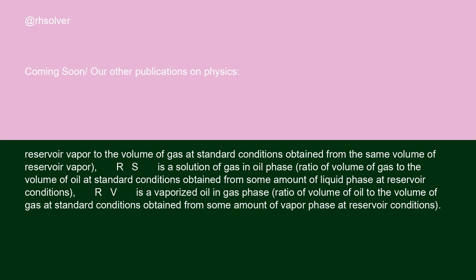Rs is a solution of gas in oil phase, the ratio of volume of gas to the volume of oil at standard conditions obtained from some amount of liquid phase at reservoir conditions. Rv is vaporized oil in gas phase, the ratio of volume of oil to the volume of gas at standard conditions obtained from some amount of vapor phase at reservoir conditions.